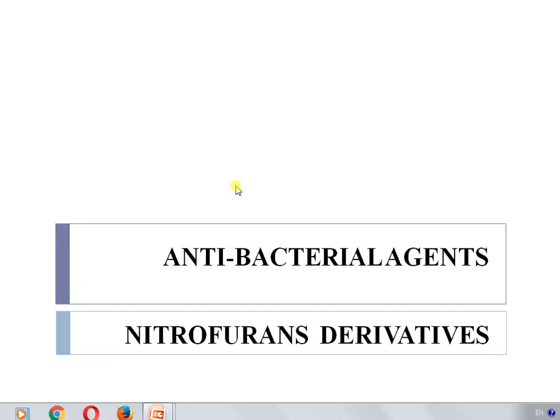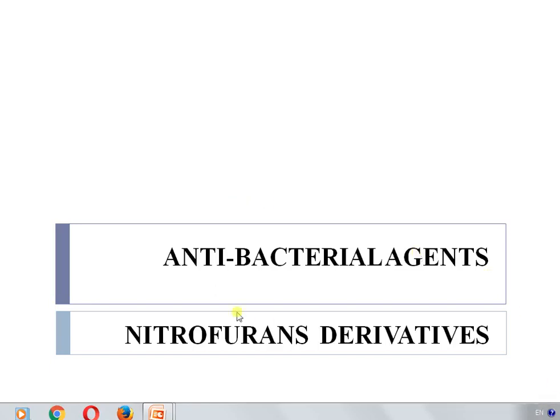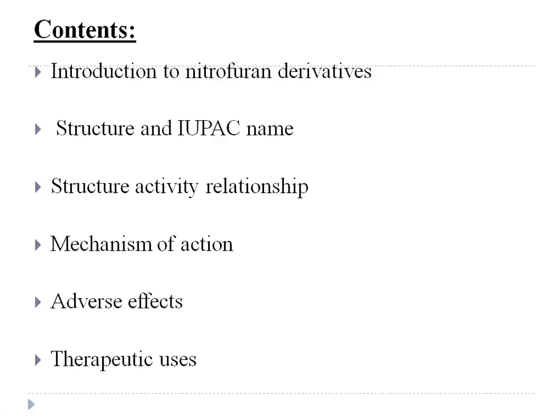Good morning. In the last two sessions we have seen antibacterial agents like sulfonamides and quinolone antibacterials — these are synthetic antibacterials. One more class remaining is nitrofuran derivatives; there are four to five chemical compounds used as antibacterial agents included in this medicinal chemistry syllabus. After completion of this presentation, the contents covered are: introduction to nitrofuran derivatives, structure and IUPAC names, structural activity relationship, mechanism of action, adverse effects, and therapeutic uses.